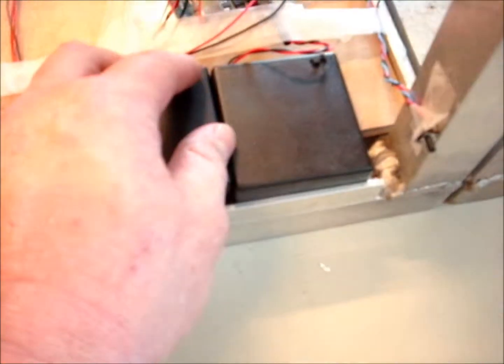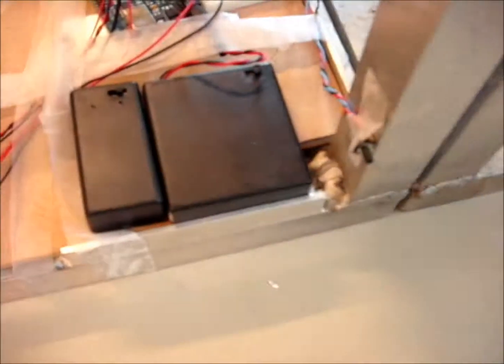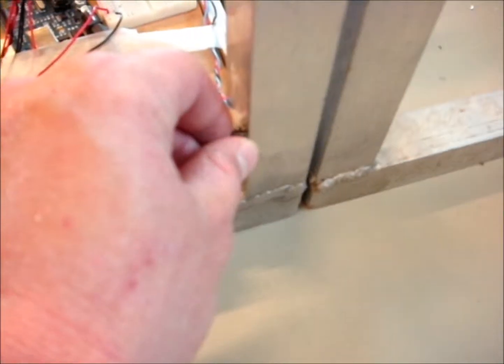To start the product, first switch on the two powerpacks starting with the smaller of the two. This controls the motors. Then the Arduino powerpack. Then simply press the engage bar.